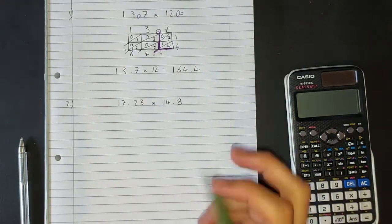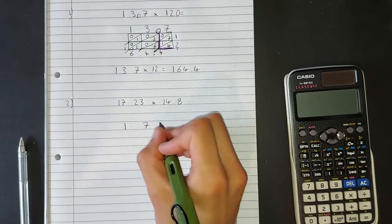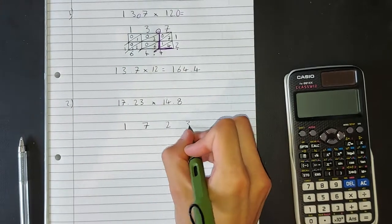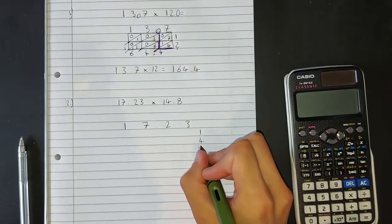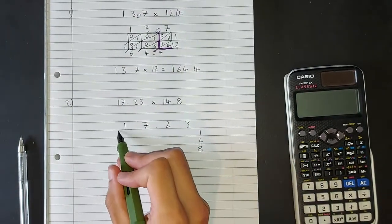I'm going to do exactly like I did before. So we're going to have 1, 7, 2, 3. Let's put our decimal there. And we're going to have 1, 4, 8. Our decimal is going to go there.